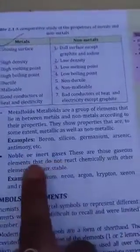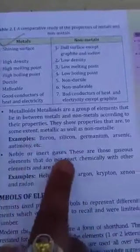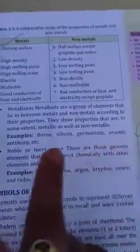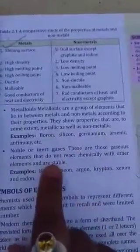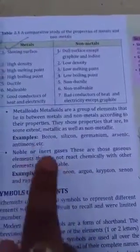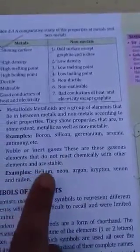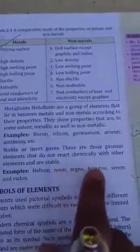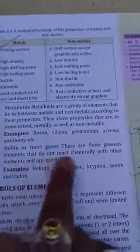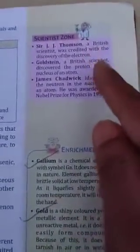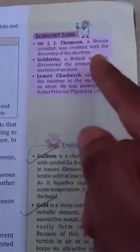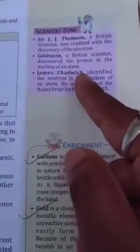Noble or inert gases — these are those gaseous elements that do not react chemically with other elements and are stable. They always remain stable and do not react with other elements. Examples are helium, neon, argon, krypton, xenon, and radon. In scientific knowledge to remember: J.J. Thompson, a British scientist, was credited with the discovery of the electron. Goldstein discovered the proton and James Chadwick identified the neutron.